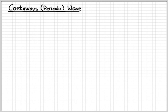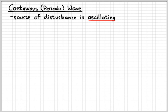A continuous wave, which is often referred to as a periodic wave, means that the source of the disturbance, the thing that is causing the wave, is oscillating. Another word for oscillating often used for wave sources is vibrating. So that means that it's moving continuously back and forth, up and down, side to side, whatever.